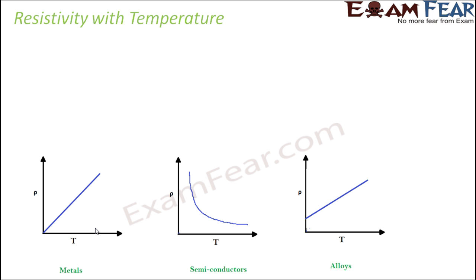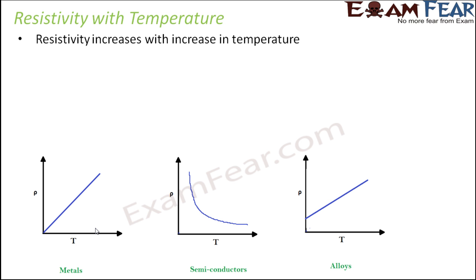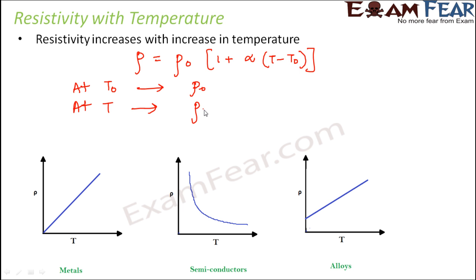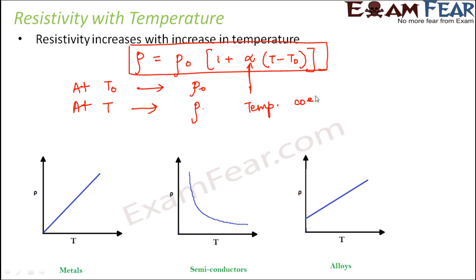Resistivity increases with increase in temperature for metals. The variation is given by: ρ = ρ₀[1 + α(T − T₀)], where ρ₀ is the resistivity at initial temperature T₀, ρ is the resistivity at temperature T, and α is the temperature coefficient of resistivity.